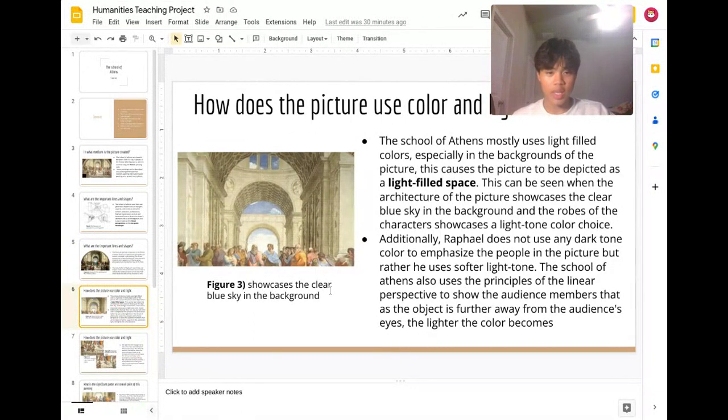How does the picture use color and light? The School of Athens uses light-filled colors, especially in the backgrounds of the picture. This causes the picture to be depicted as a light-filled space. This can be seen when the architecture of the picture showcases the clear blue sky in the background, which can be seen in Figure 3.